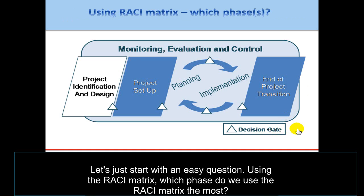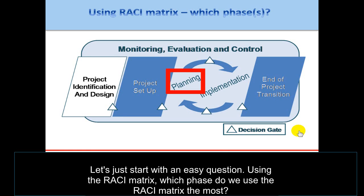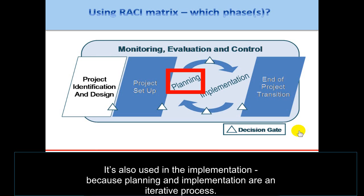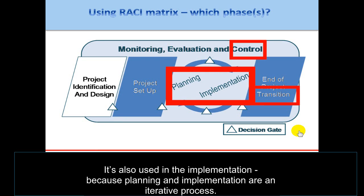Let's start with an easy question. Using the RACI Matrix, which phase do we use it the most? It's in the planning phase that we use the RACI Matrix the most, and it's also used in implementation because planning and implementation are an iterative process.